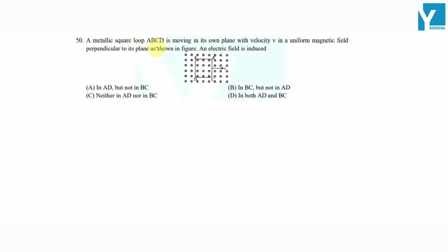A metallic square loop ABCD is moving in its own plane with velocity v in a uniform magnetic field perpendicular to its plane as shown in the figure. An electric field is produced.